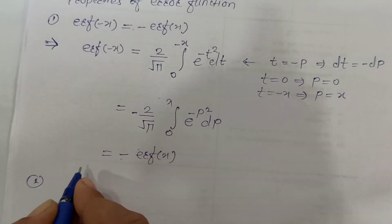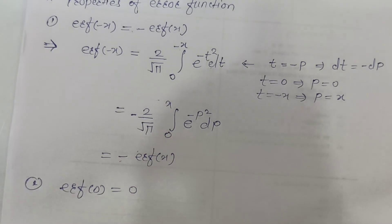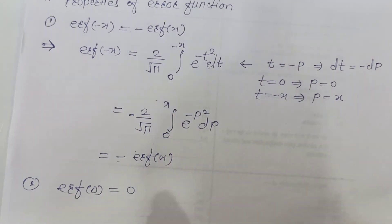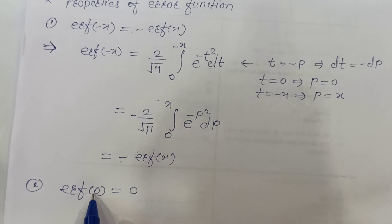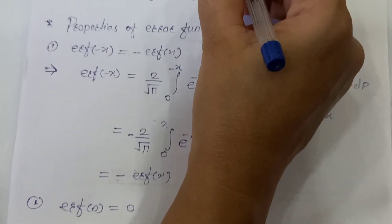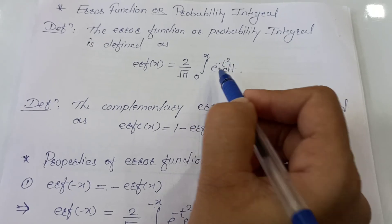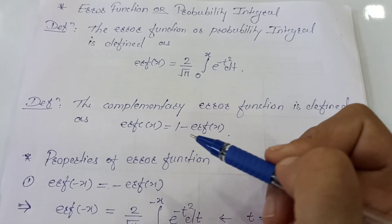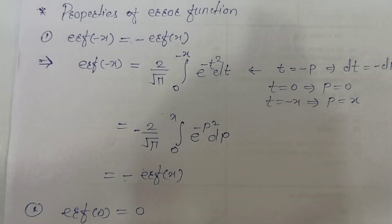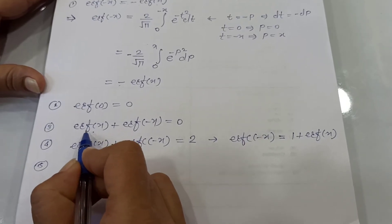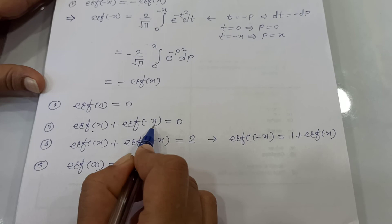The second property of the error function is Erf of 0 equals 0. There is nothing to prove here: if you pass 0 as the argument in the definition, substituting x with 0 makes the integration equal to 0, so Erf of 0 is 0. The third property is Erf of x plus Erf of minus x equals 0, which follows directly from the first property since Erf of minus x equals minus Erf of x.